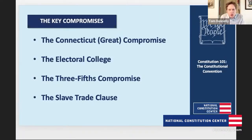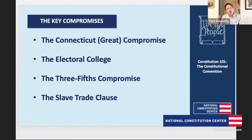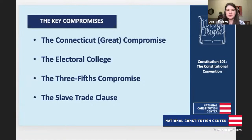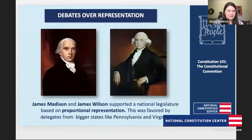We're going to go through the Connecticut or Great Compromise, the compromise of the presidency — in particular the Electoral College — and then two compromises over the institution of slavery: the Three-Fifths Compromise and the Slave Trade Clause. Let's start with the Connecticut Compromise, which was about the issue of representation. Explain that to us, Tom.